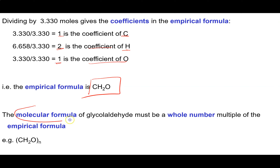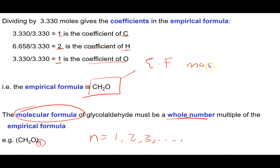The molecular formula must be a whole number multiple of the empirical formula — it's the mass of CH₂O multiplied by some whole number N (1, 2, 3, etc.). Our job is to figure out what N is. The empirical formula mass is 12.01 + 2×1.01 + 16.00, which comes out to 30.03 AMU.